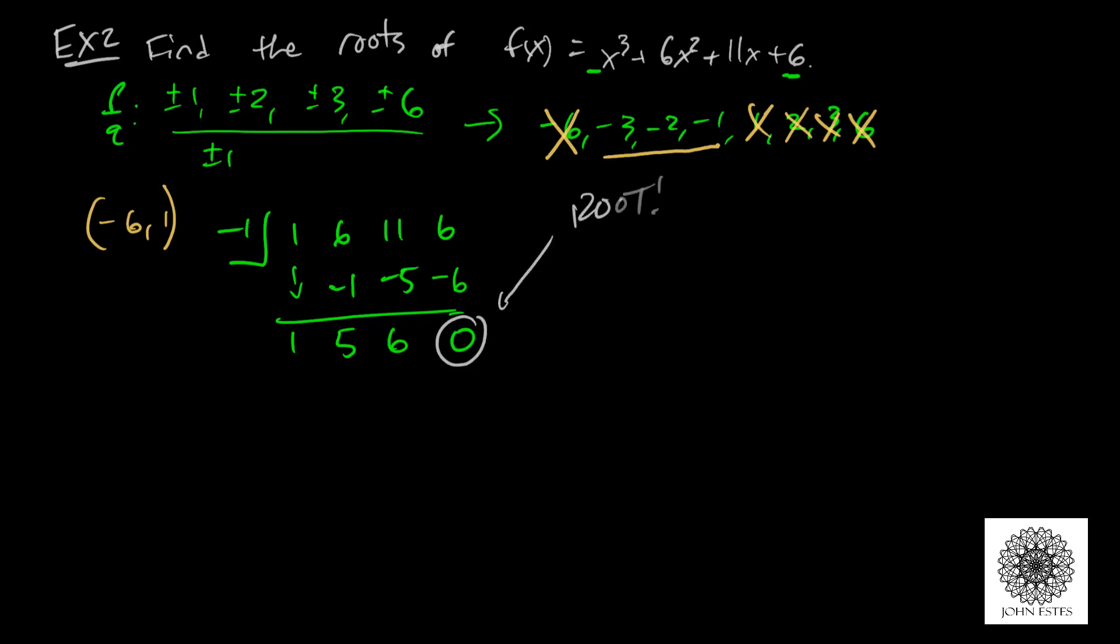That means I have found a root. So my function then factors as x minus negative 1, which is x + 1, times x² + 5x + 6. I got that from my quotient here.